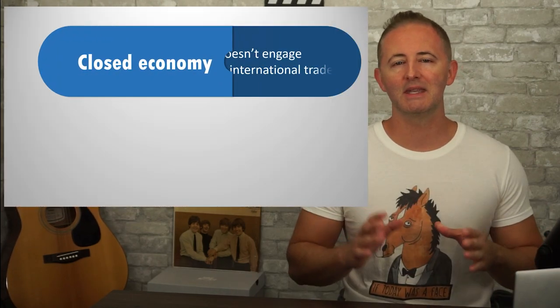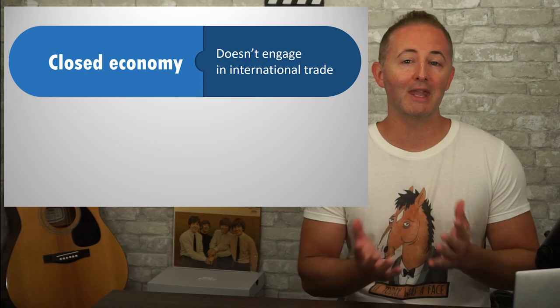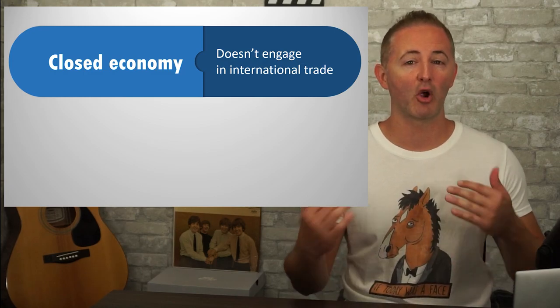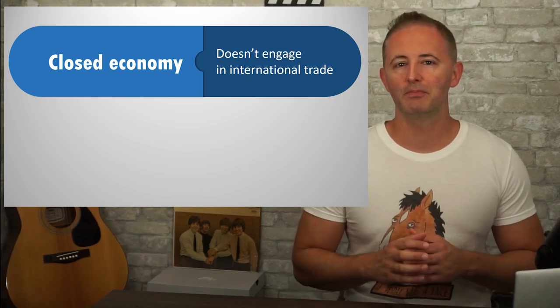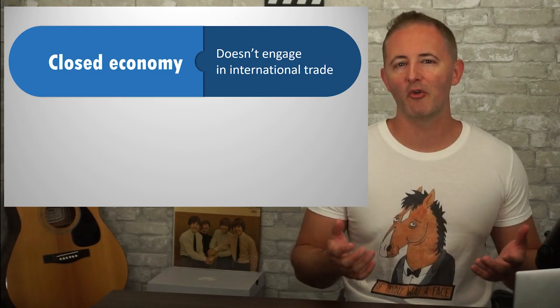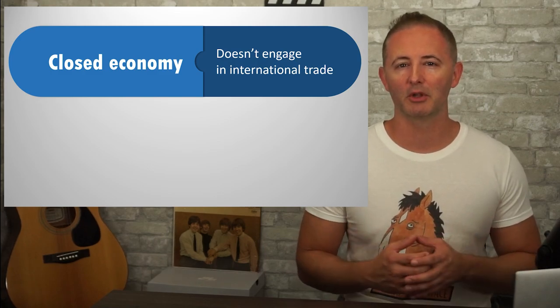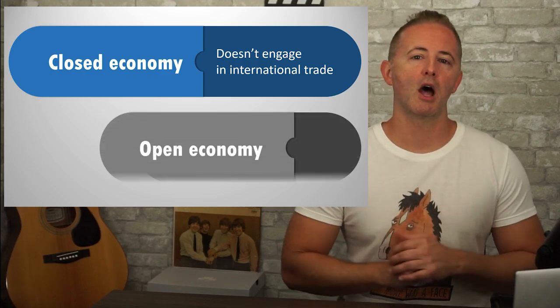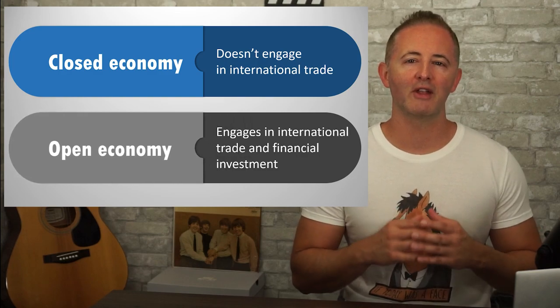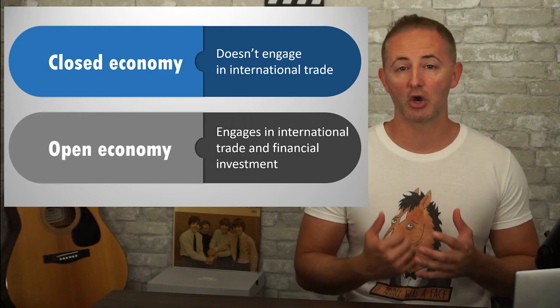For most of this year, we've either implicitly or sometimes explicitly assumed that we're in a closed economy that doesn't engage in trade with anybody outside of our own economy. Obviously that's not true, but it made some of what we did earlier in the year a little bit simpler. This unit is all about open economies where international trade and financial investment occur.